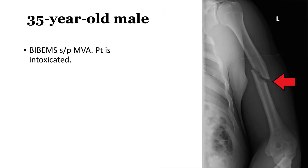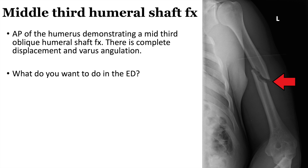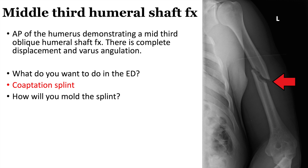Next: 35-year-old male brought in by EMS, status post motor vehicle accident, patient is intoxicated. This is an AP of the humerus demonstrating a mid-third oblique humeral shaft fracture. There is complete displacement and varus angulation. In the ED, we check neurovascular status, open versus closed, and apply a coaptation splint. When molding the splint, since there's varus angulation, we're looking to put it in valgus. The first commandment of orthopedic surgery: thou shalt not varus.